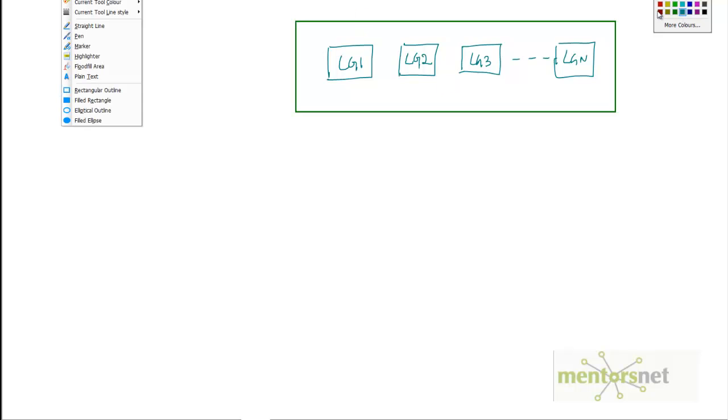To do that, let's say these are our load generators. LG1 is the load generator to login, LG2 is another load generator that is going to browse the course. These are basically different standalone load generators. Similarly we have LG3 and up to say LGn.